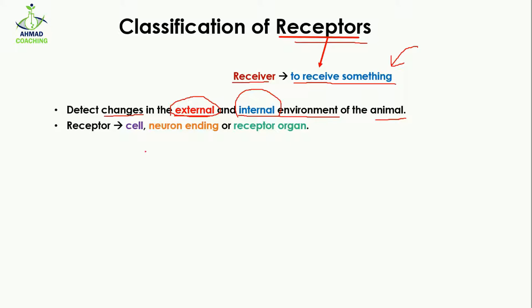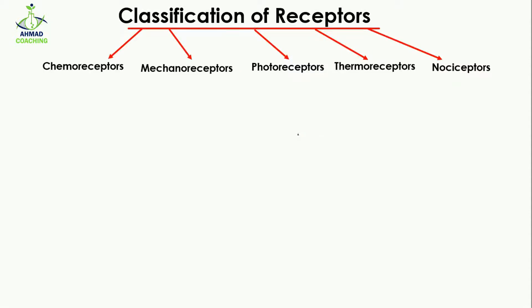In animals, receptors may be cells, neuron endings, or receptor organs. When we talk about the classification of receptors, we have five types: chemoreceptors, mechanoreceptors, photoreceptors, thermoreceptors, and nociceptors.